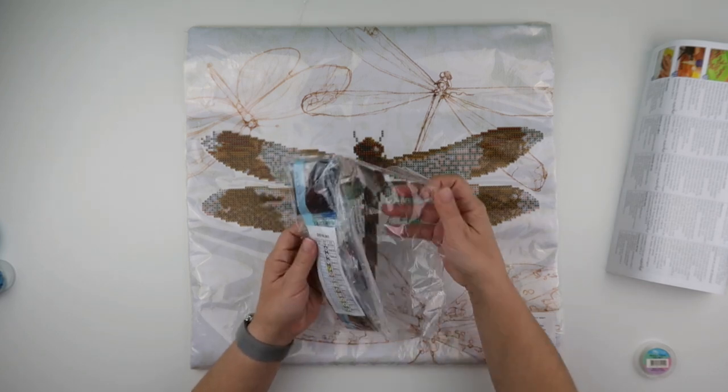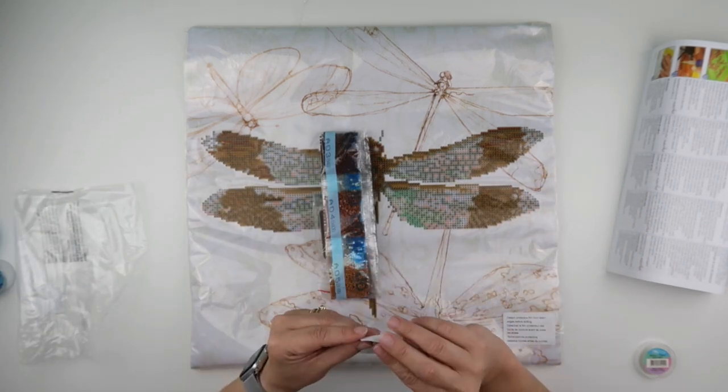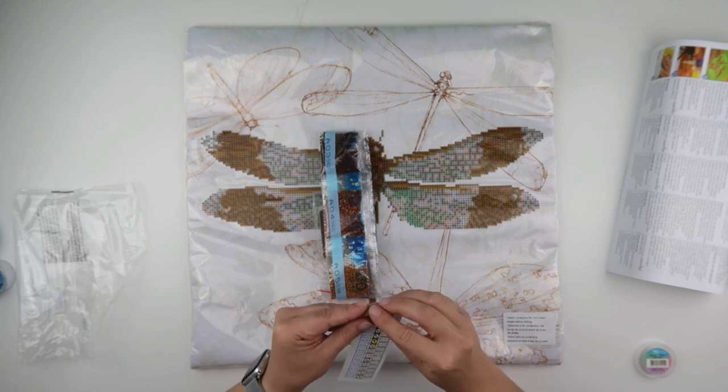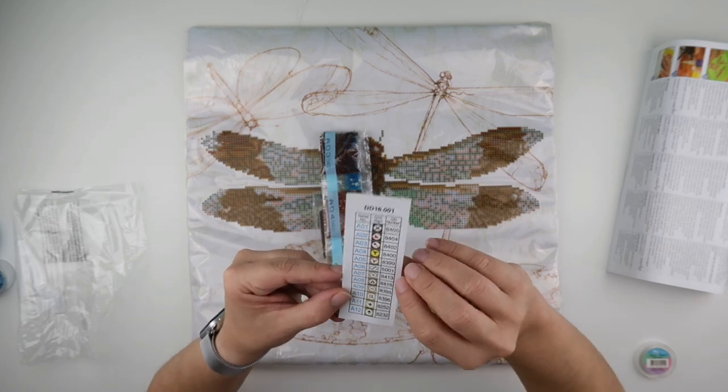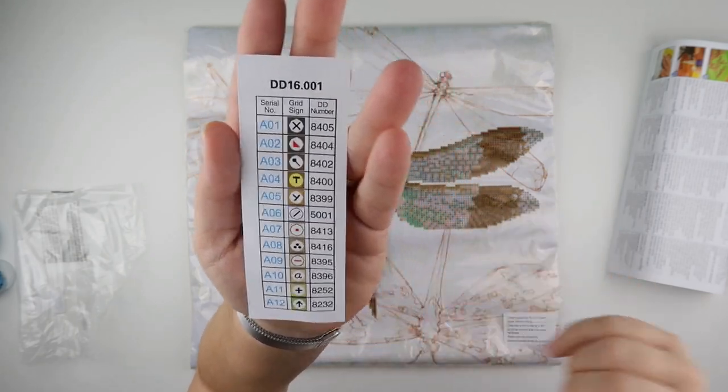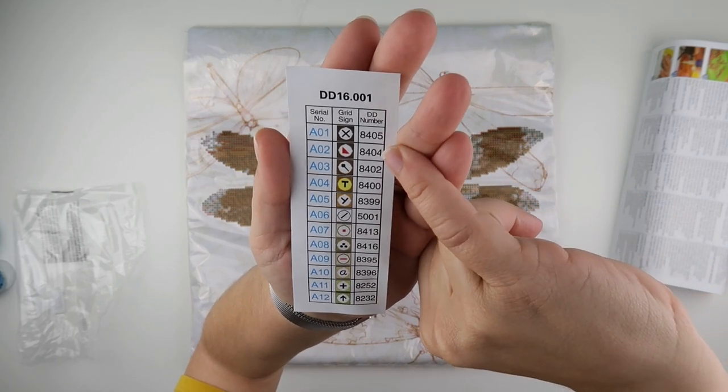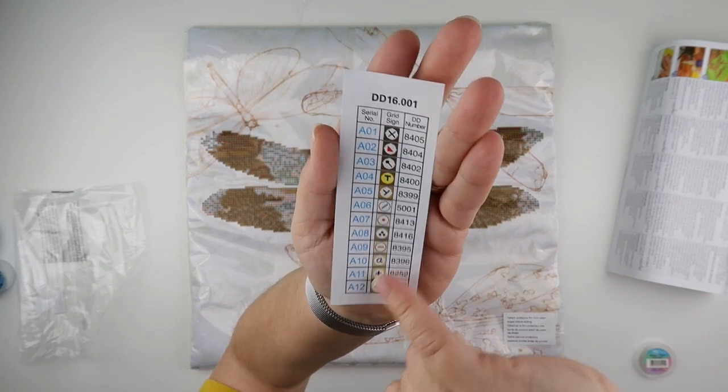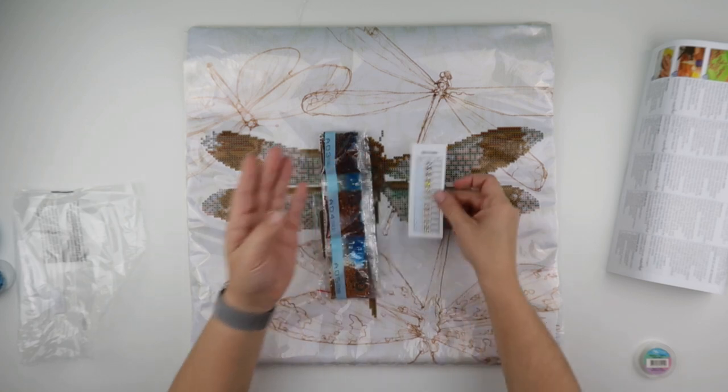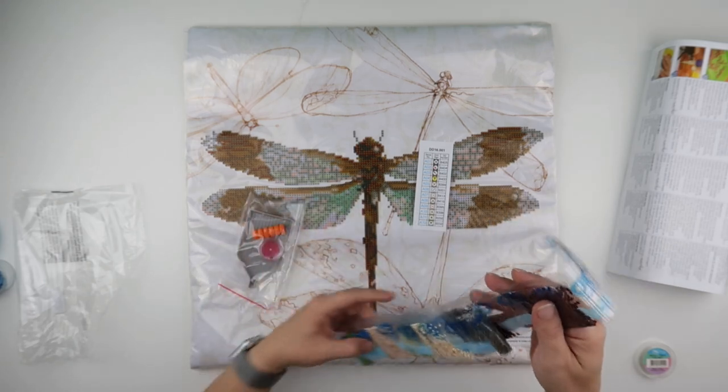We get a little sheet with the colors. It doesn't seem to be a sticker, but they have what's called a Diamond Dot number, so it's not the same as DMC, which is going to be entertaining. We have the Diamond Dot number of 8405 all the way down, and we have 12 colors total. We've got A1, A2, A3, so that's the list for this one.